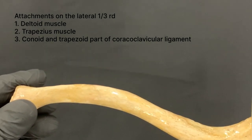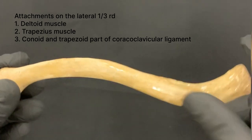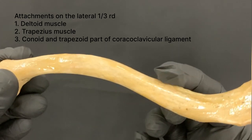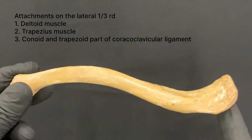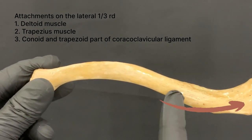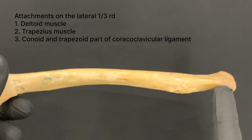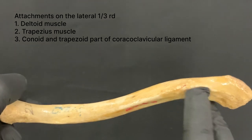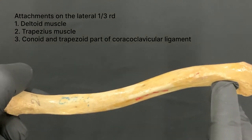The attachments on the lateral one-third of the shaft: the anterior border gives origin to the deltoid muscle; the posterior border provides attachment to the trapezius muscle; and the conoid tubercle and the trapezoid ridge give attachment to the conoid and trapezoid parts of the coracoclavicular ligament.